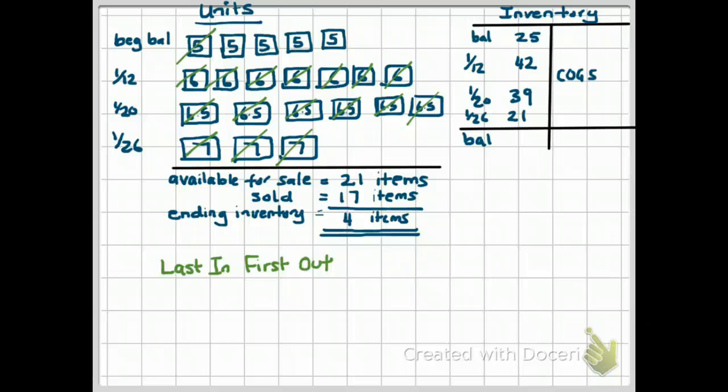Remember, this is just an inventory valuation method. So now let's value our cost of goods sold. Cost of goods sold would be $21, which is the sum of the 26th purchase, plus $39, plus $42, plus one of the $5 ones from our beginning balance. So $21, plus $39, plus $42, plus one of the $5 inventory items, giving us a total of $107.